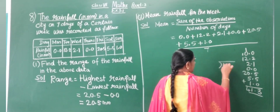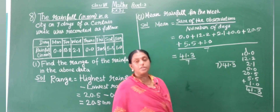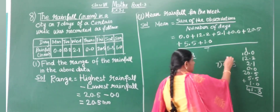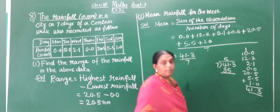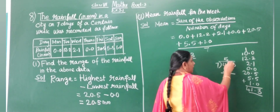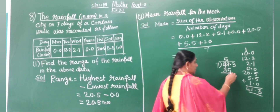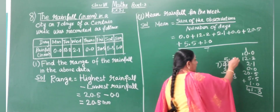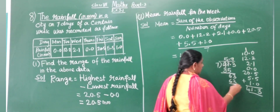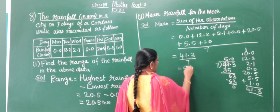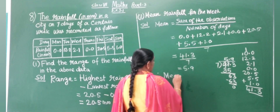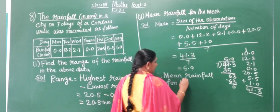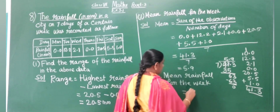Now 41.3 divided by 7. Seven fives are 35, so 5 with remainder 6. Bring down to get 63. Nine sevens are 63. So we get 5.9. Mean rainfall for a week equals 5.9 mm.